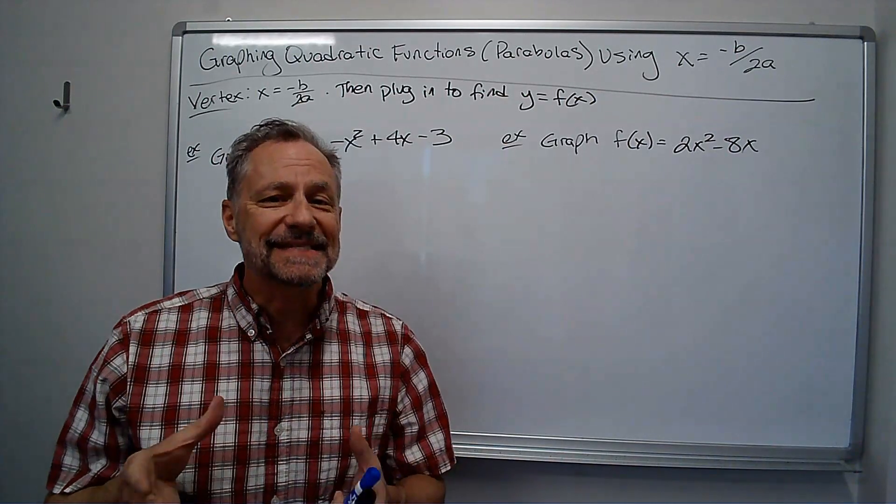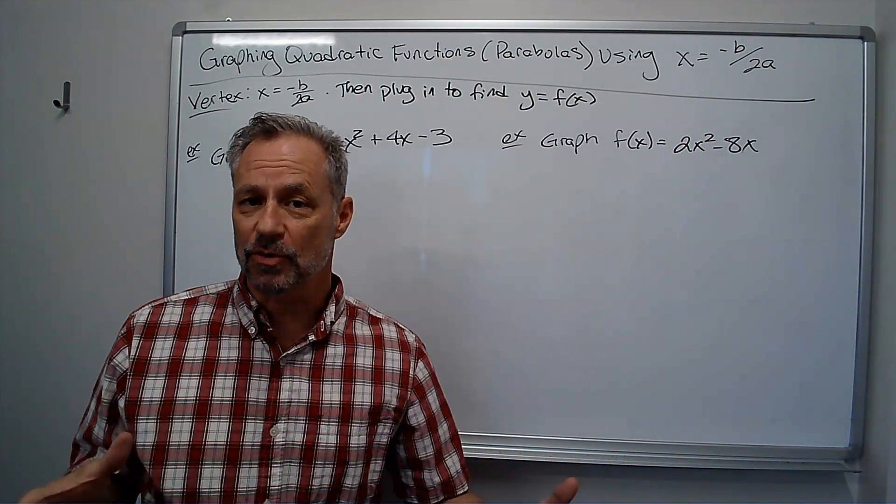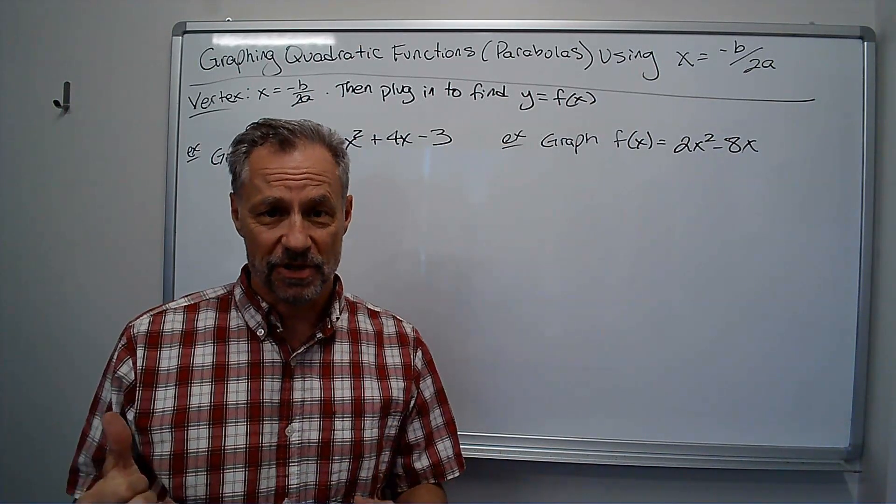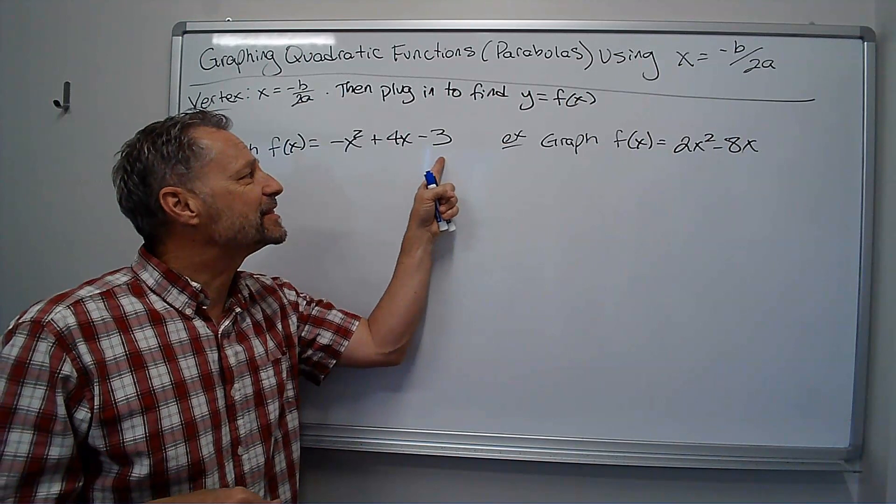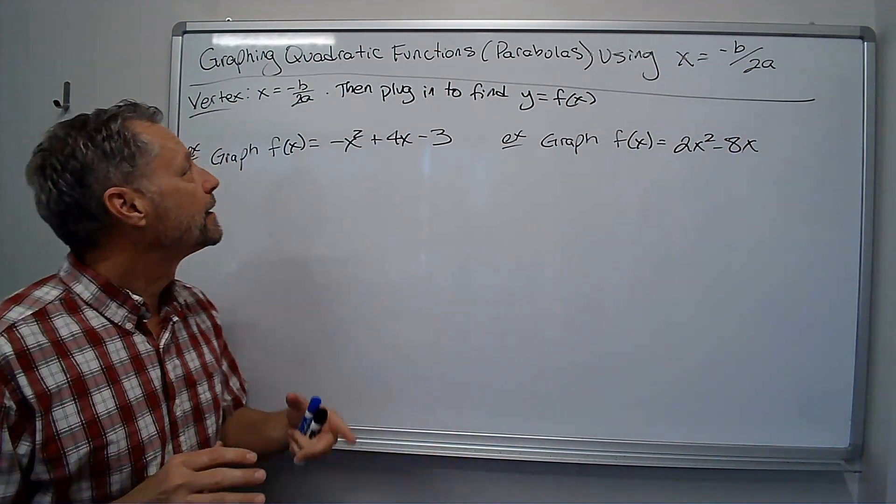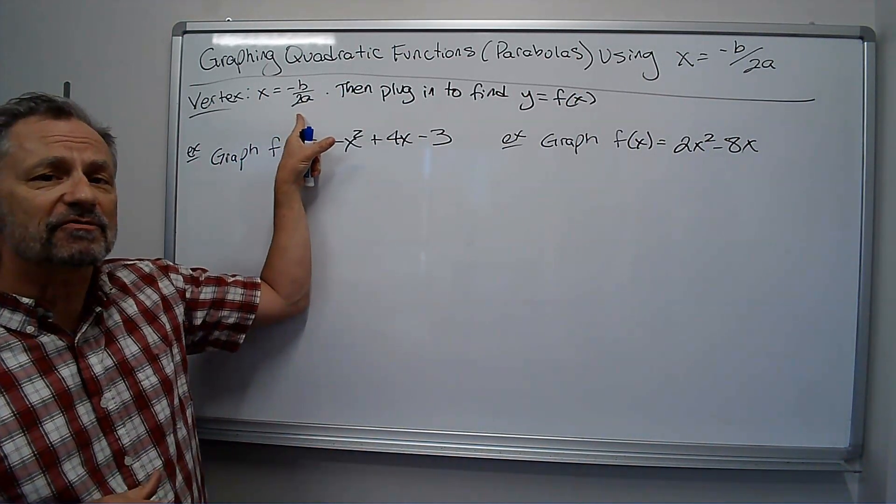If the problem is already set up where it's completed the square, I'll just use translations to graph it real quickly. I've got a video that talks about that. But if not, if it's something like this where it's not already written out as a perfect square, I'm going to use the idea that the x value of the vertex is just negative b over 2a.